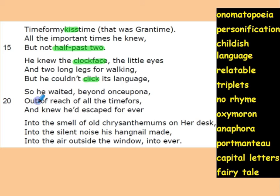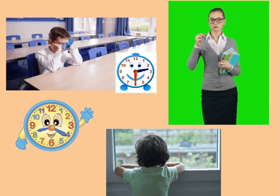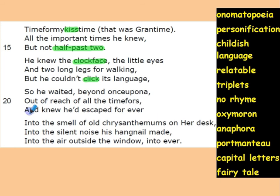So what he did — he waited. 'Beyond, once upon, out of reach of all the time force, and knew he had escaped forever.' He's just waiting and waiting, going beyond all the times that we have in the real world, and he escapes. 'Knew he had escaped forever' — we cannot escape forever, but for him at that moment it seemed he had escaped forever from all the time force: kiss time, school time, time to go home, TV time.